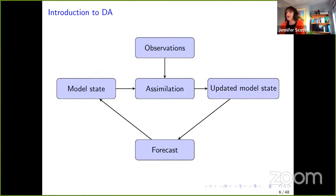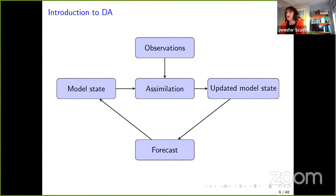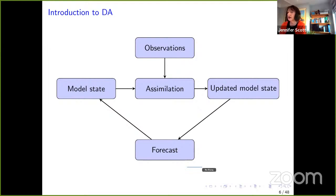Here's a simple schematic view of data assimilation. It's typically a sequential time-stepping procedure that takes a previous model forecast, applies a correction based on newly obtained observations and estimated errors in the observations and forecast, and produces an updated model state used to produce the next forecast, going around in a circle. In practice, forecasting centres run ensembles of forecasts — in the case of ECMWF, they use 50 other forecasts with slight variations in the initial state — but today I'm just going to look at a single initial state.